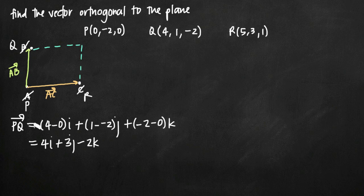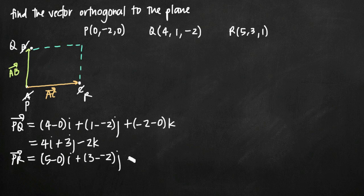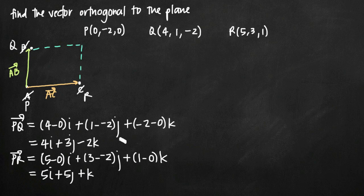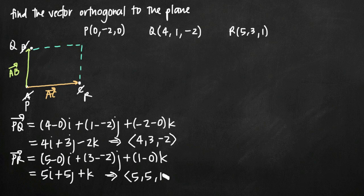Now we do the same thing for vector PR, using the components of R instead of Q. We get: 5 minus 0 gives 5i; 3 minus negative 2 is 3 plus 2, or 5, giving plus 5j; and 1 minus 0 gives plus k. So vector PR = 5i + 5j + k. We can also write these as direction numbers: PQ is ⟨4, 3, -2⟩ and PR is ⟨5, 5, 1⟩. These two vectors define our plane.